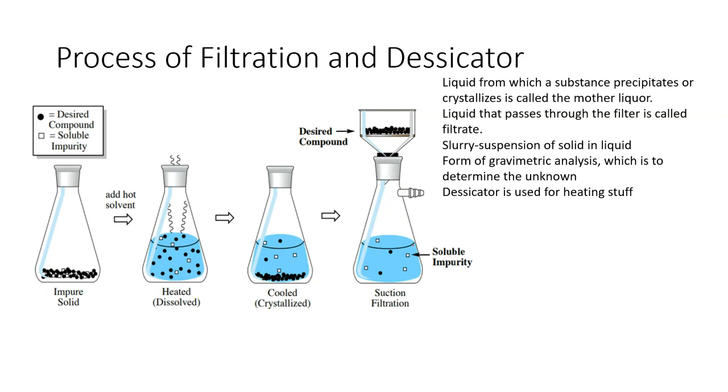Process of filtration and desiccator. The process begins with an impurity solid. When you add hot solvent and it's heated and eventually dissolves, you have two parts instead of one - your soluble impurity and the desired compound. Your desired compound is insoluble. After being heated, it's cooled and crystallized. Then it's suction filtered, and you get the desired compound into this funnel.